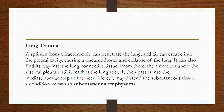Now we will discuss lung trauma. A splinter from a fractured rib — that is, a broken piece from a fractured rib — can penetrate the lung and air can escape into the pleural cavity, causing pneumothorax and collapse of the lung.